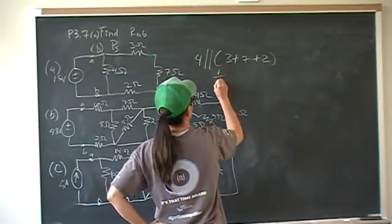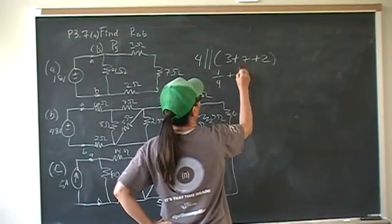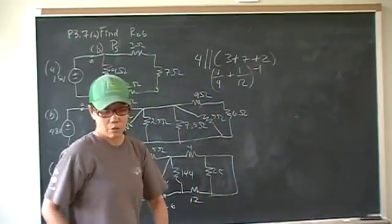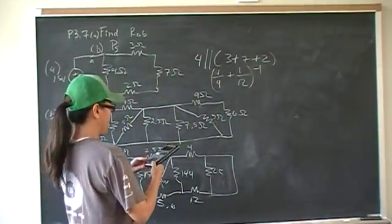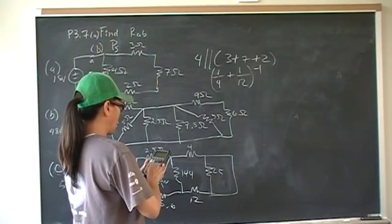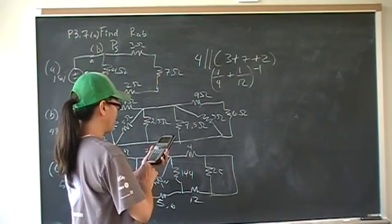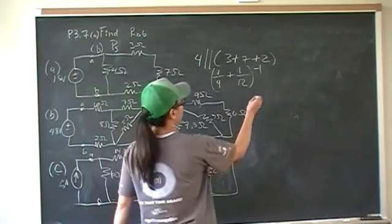So we have 1 over 4 plus 1 over, this is 12. Put that into your calculator, 1 divided by 4 plus 1 divided by 12. That's going to be 3.